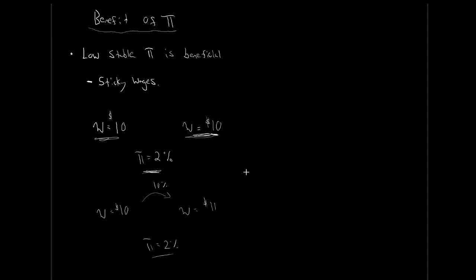So what have we covered today? We've introduced inflation as the percent change in prices over time, looked at the Consumer Price Index, measured inflation using a CPI table, examined how Statistics Canada actually calculates CPI, discussed some problems with CPI — including that it may overestimate inflation — and then looked at the costs and one key benefit of inflation.